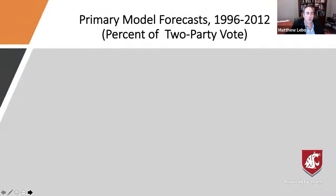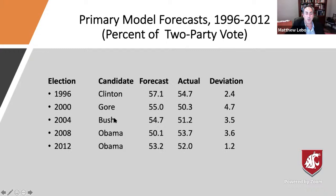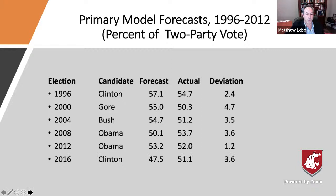For 1996 to 2012, the primary model forecast that Clinton would win, predicted Al Gore would win — which was correct in terms of the popular vote — predicted Bush would win in 2004, and Obama both times. It does a pretty good job, perhaps in part because the electoral pendulum has been so reliable over the last 30 years. In 2016, it predicted that Donald Trump would win the popular vote; he didn't win the popular vote but he won the general election. It was still a decent indicator that things were swinging away from the Democratic Party — after eight years, the pendulum swinging back generally means the electorate is ready for a change.